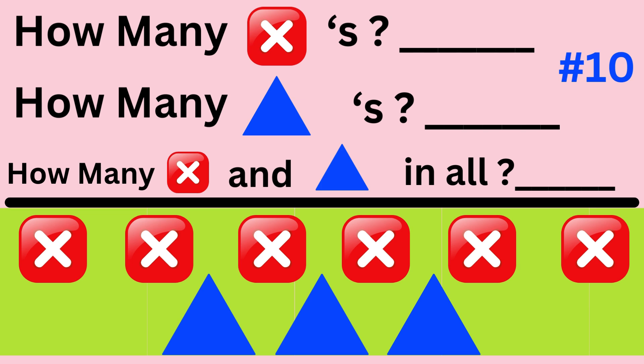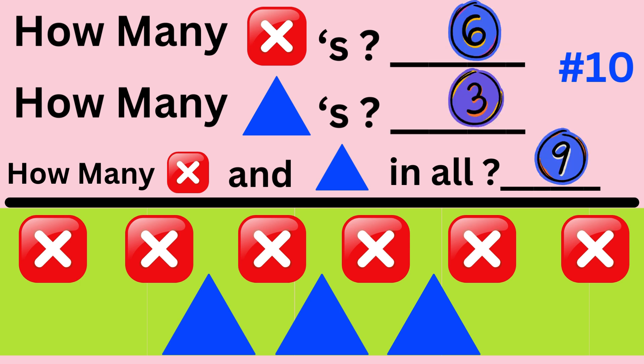Word problem number ten. The word problem asks how many red X squares are there, how many blue triangles are there, then how many red X squares and blue triangles in all? Work the problem and then we will review together. The answer is there are six red X squares and three blue triangles, so there are a total of nine in all.